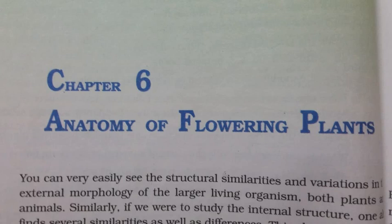6.2 The Tissue System. We were discussing types of tissues based on the types of cells present. Let us now consider how tissues vary depending on location in the plant body; their structure and function would also be dependent on location. On the basis of structure and location, there are three types of tissue systems: the epidermal tissue system, the ground or fundamental tissue system, and the vascular or conducting tissue system.